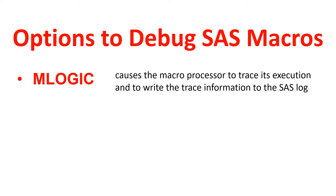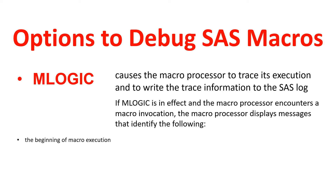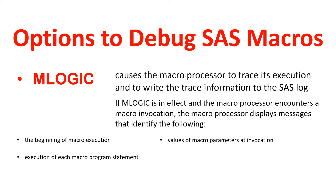Let's have a look at all the information that MLOGIC provides. First, if MLOGIC is in effect and the macro processor encounters a macro invocation, the macro processor displays messages identifying the macro. Here is what MLOGIC provides: first, the beginning of the macro execution; second, values of the macro parameters at invocation; third, execution of each macro program statement; fourth, whether each if condition is true or false; and fifth, the ending of the macro execution.